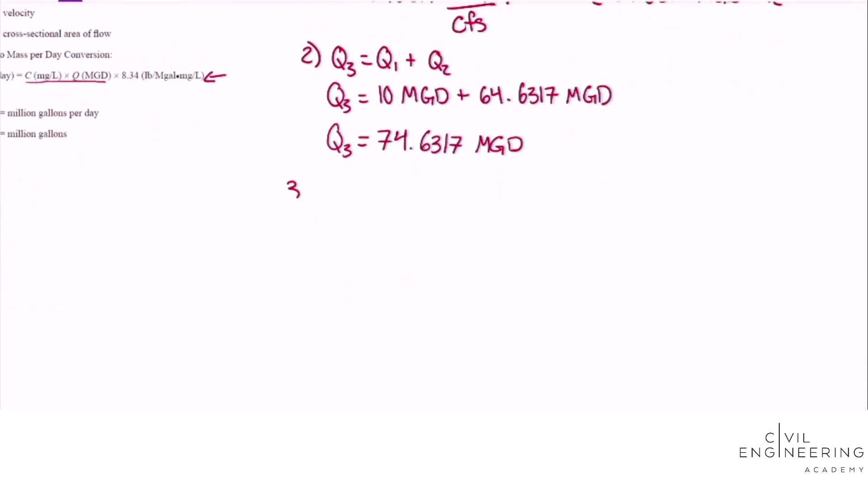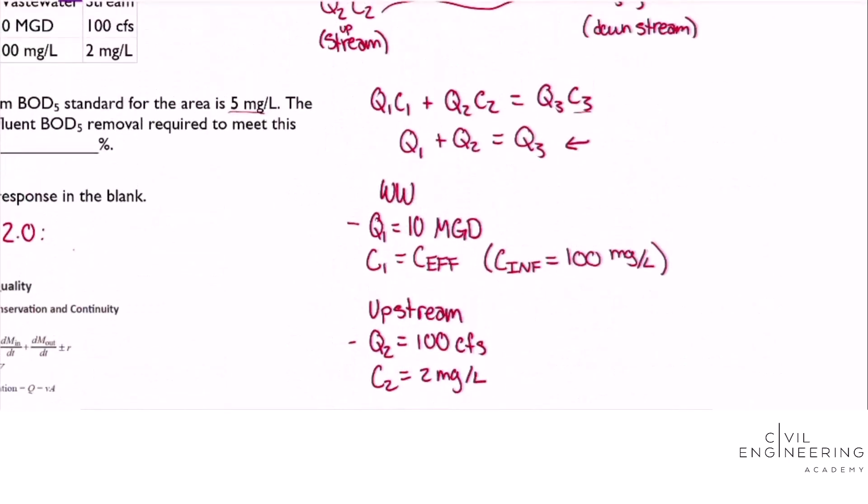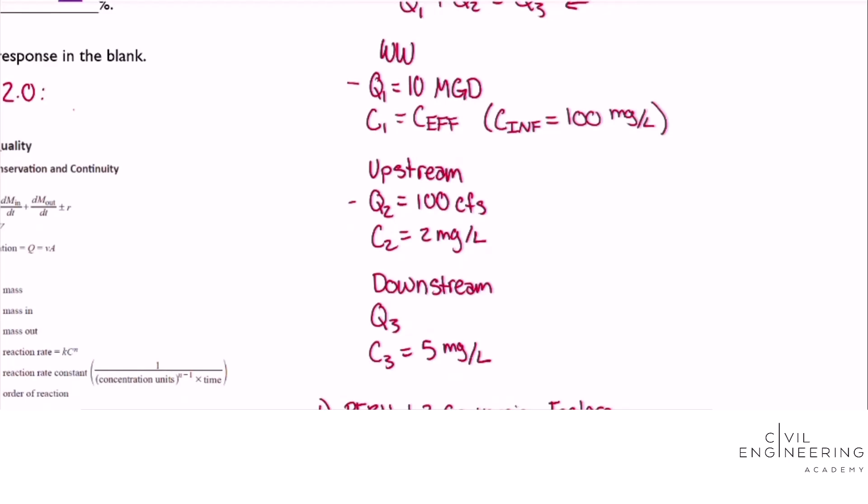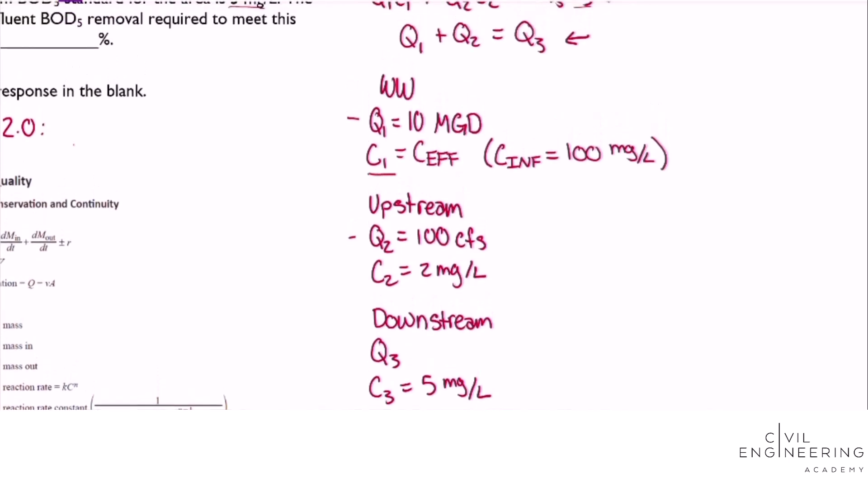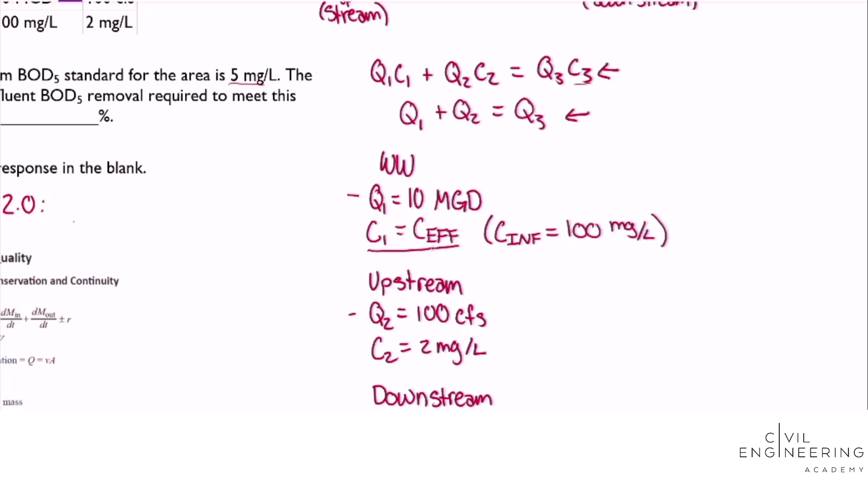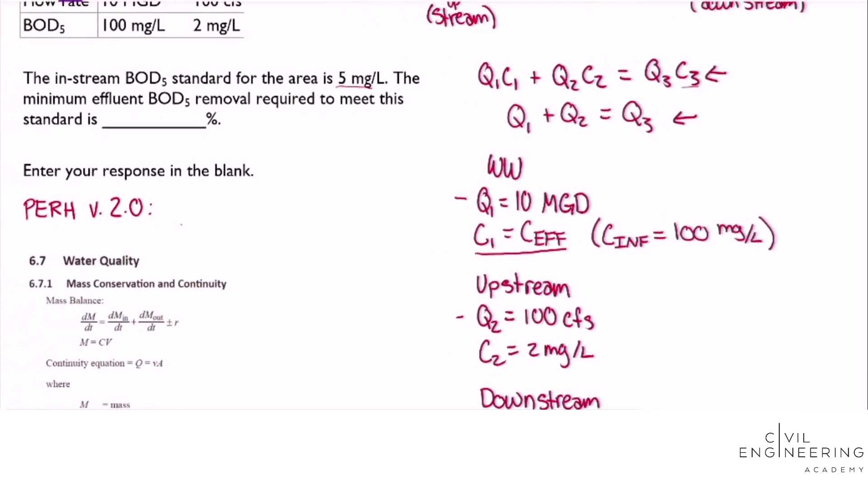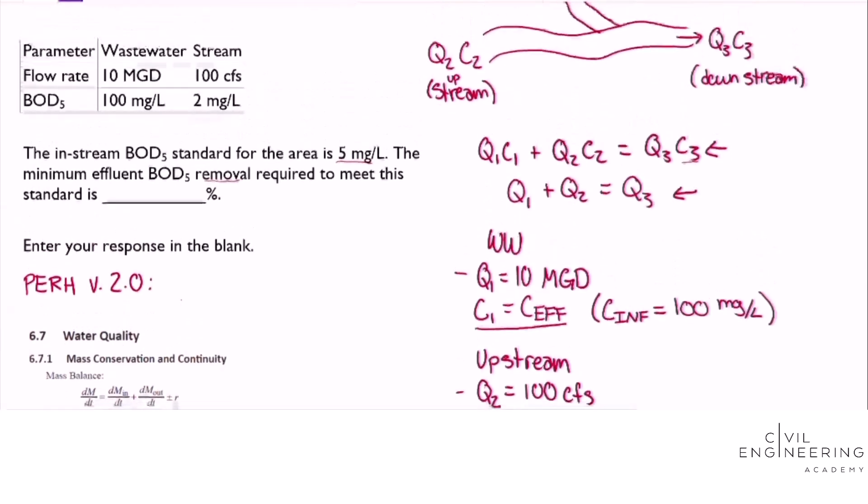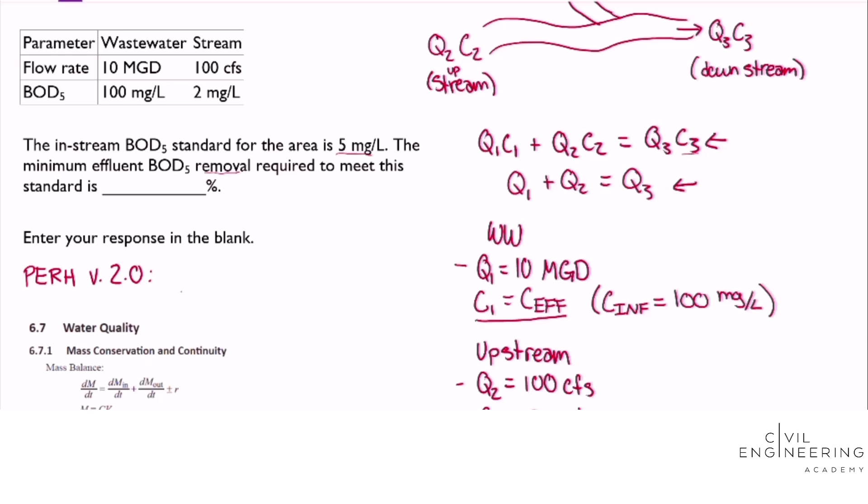Our third step we'll need to use this equation now and we are looking for C1 because we want to find the effluent BOD5 of this wastewater treatment plant to determine that removal percentage. So we'll solve this equation for C1.